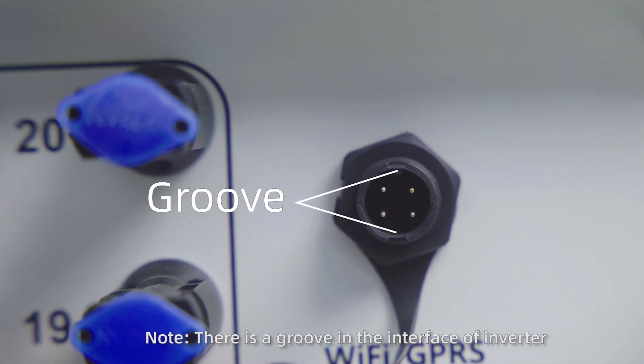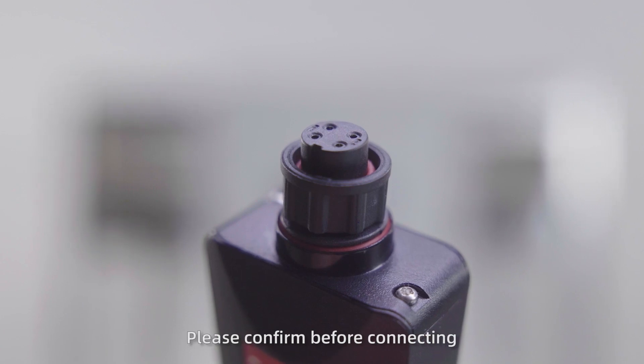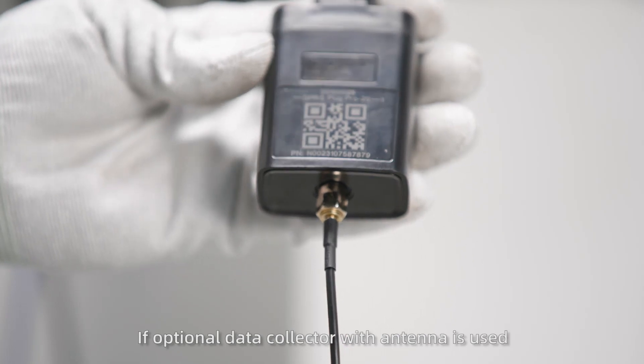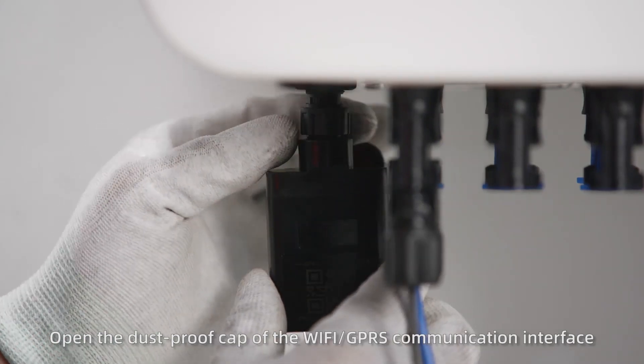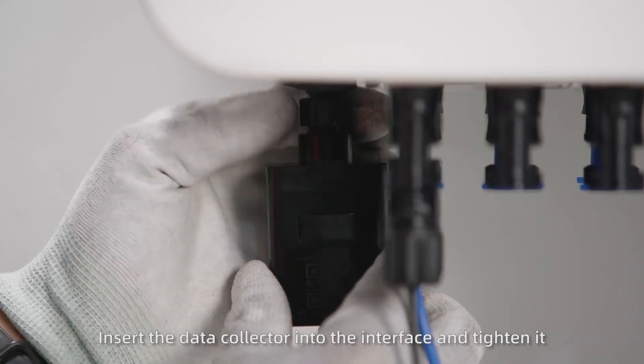Note, there is a groove in the interface of inverter. To avoid wrong connection, please confirm before connecting. If optional data collector with antenna is used, open the dustproof cap of the Wi-Fi, GPRS communication interface, insert the data collector into the interface, and tighten it.